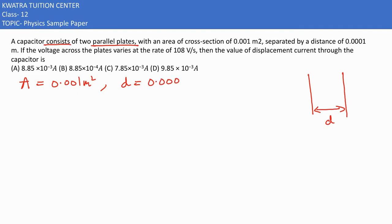Which is 0.001 meter. Sorry, meter it would be, only distance is there. And then they are saying the voltage across varies at the rate of 10 to the power 8. So I can understand voltage is changing with respect to time because of the units, volt per second. So it would be 10 to the power 8 volt per second.